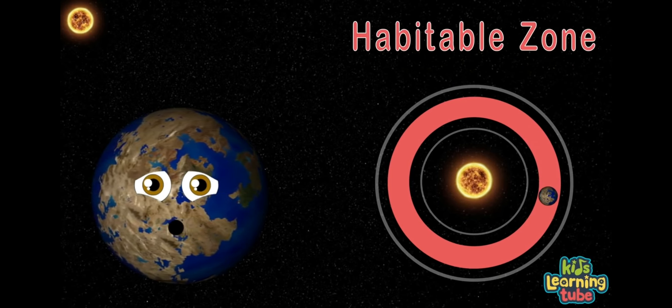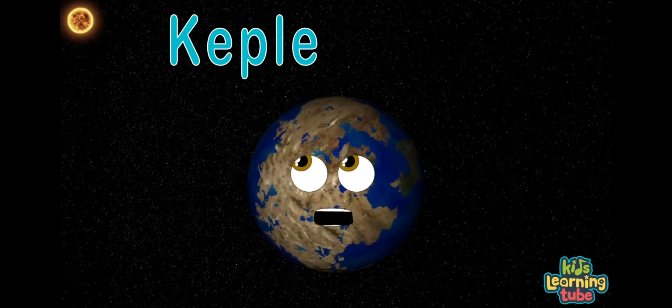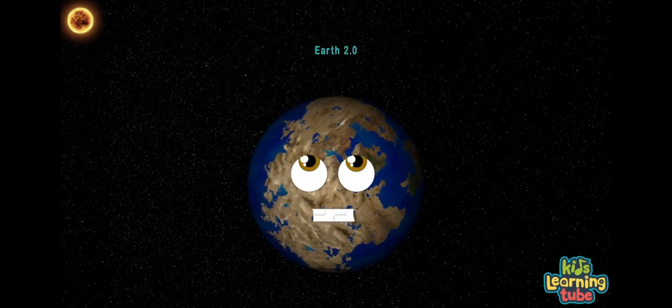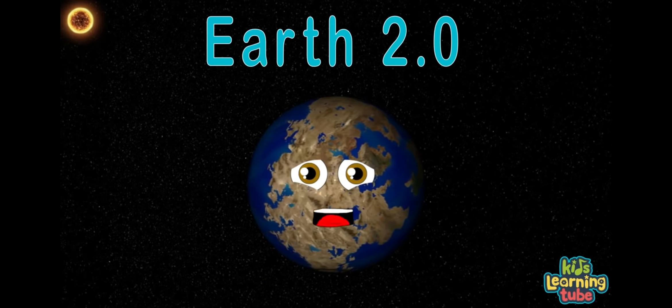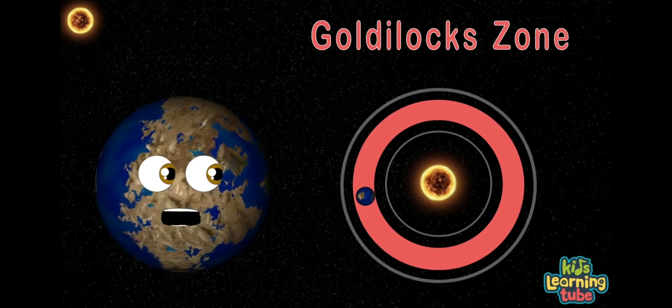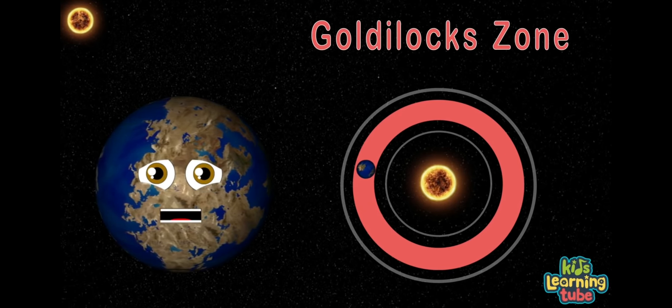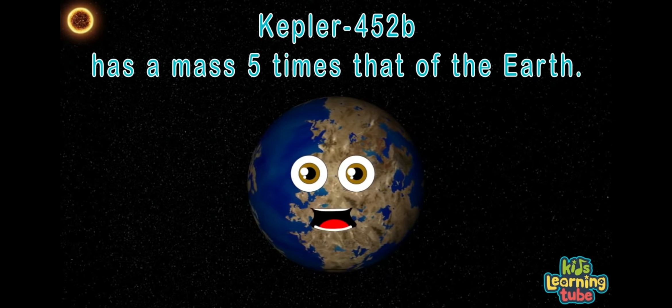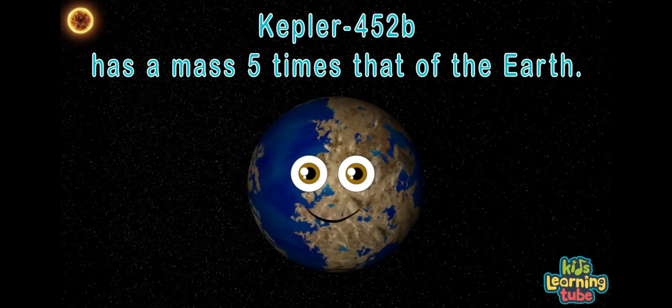My name is Kepler-452b, also known as Earth 2.0. Yeah, that's me. I may support life within the Goldilocks zone while orbiting a sunlight star like yours at home. I have a probable mass five times that of the Earth, though that's a rough estimate from astronomers, of course.